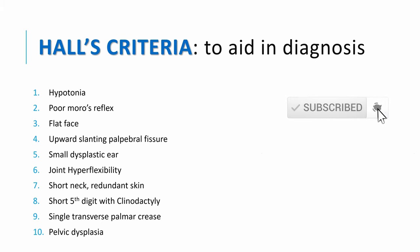What are the Hall's criteria to aid in diagnosis? Out of all the clinical features discussed, these 10 are the Hall's criteria. Presence of four or more of these criteria is highly specific for the presence of Down syndrome in the child.